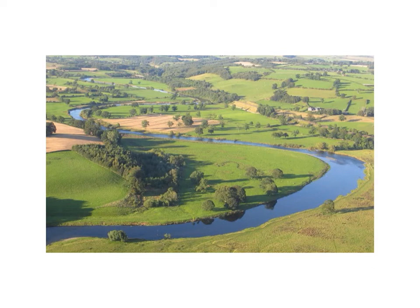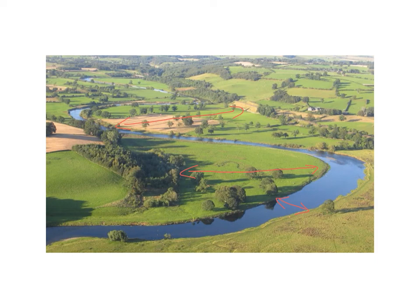Here we can see a river in its middle course with a lovely meander flowing through the river valley. The channel itself is much wider and likely to be much deeper, carrying much more load. Looking at the river valley, it has a very wide flood plain on either side. You can see the bluff line where the valley sides start to increase in height and steepness, and there's another bluff line on the other side as the valley starts to increase in steepness in that direction.